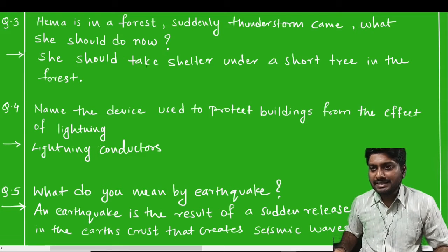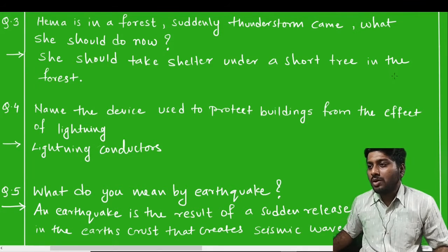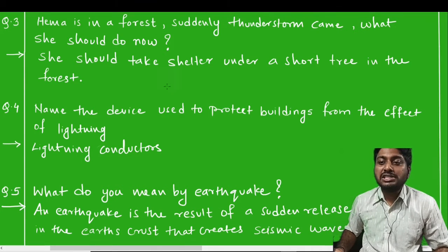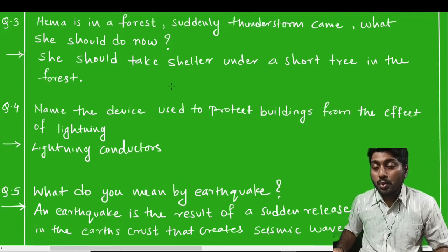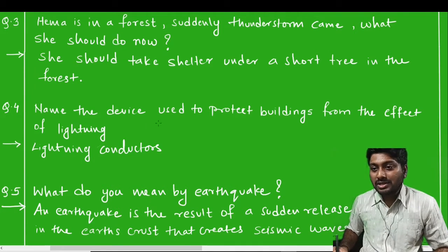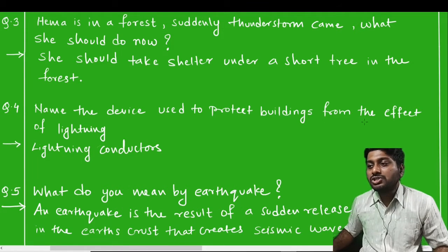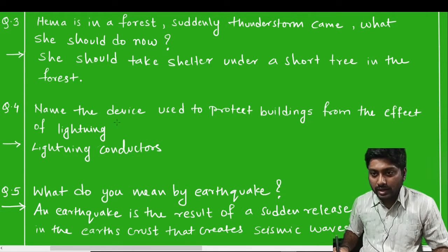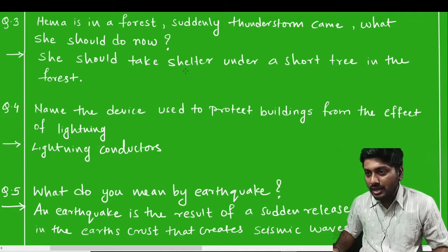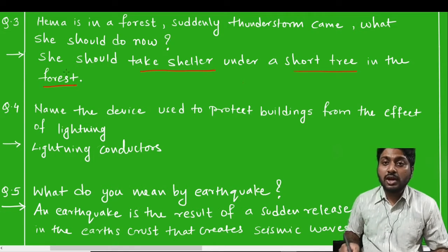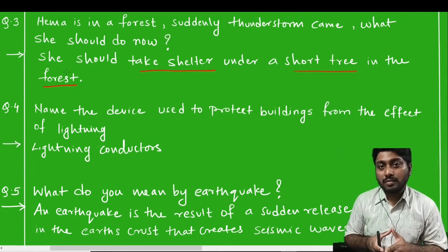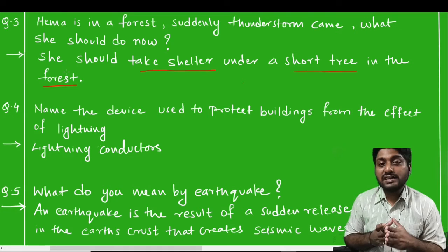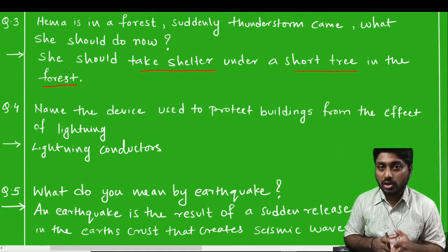Question number three: Hema is in a forest. Suddenly, a thunderstorm came. What should she do now? The best and safest thing she can do is take shelter under a short tree in the forest.